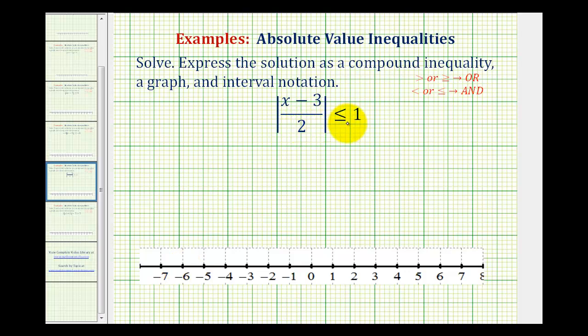We want to solve the given absolute value inequality by expressing the solution as a compound inequality, a graph, and using interval notation. We have the absolute value of the quantity x minus three divided by two is less than or equal to positive one.